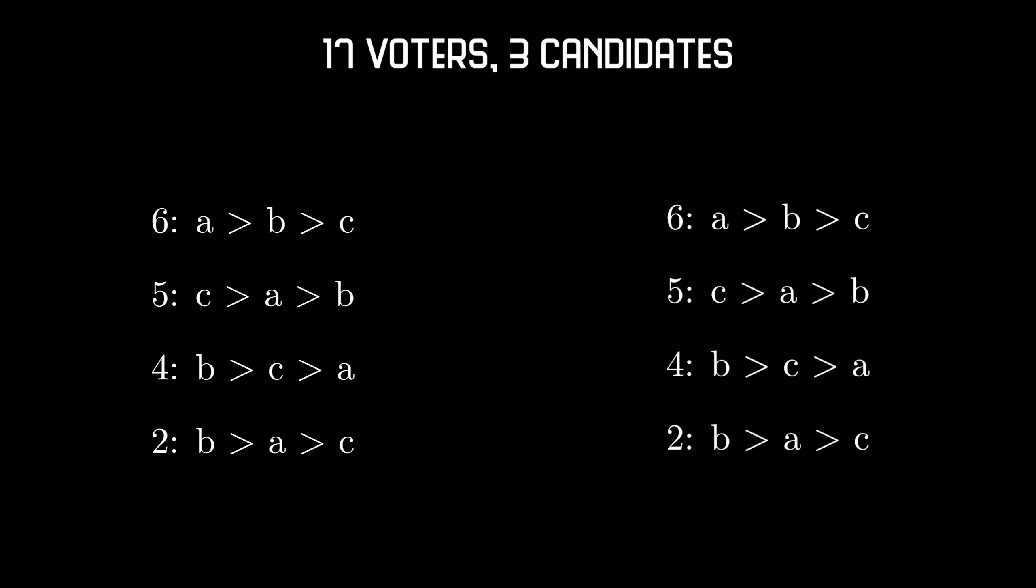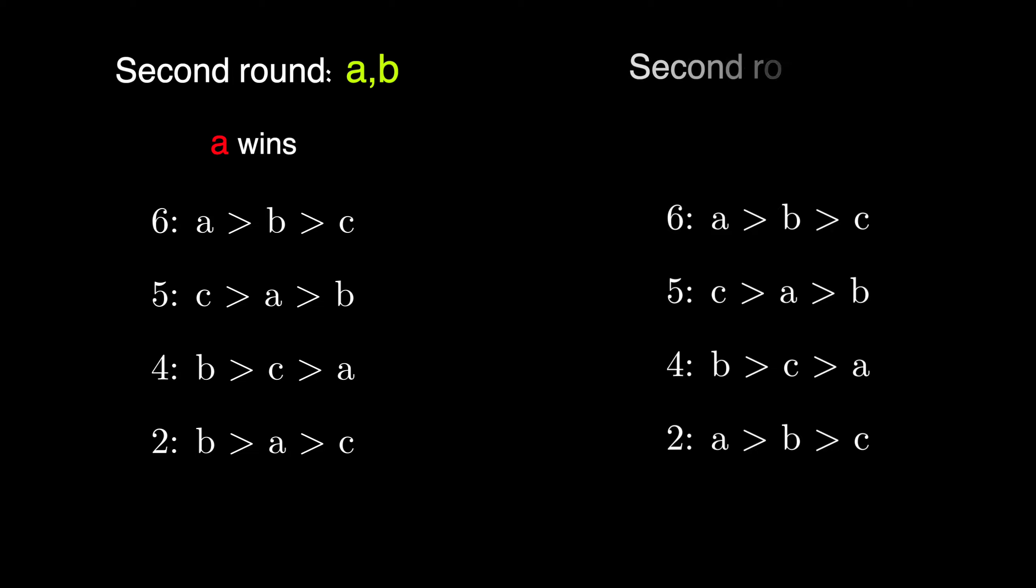And now I want to demonstrate something extremely special. Let's have 17 voters and 3 candidates. Consider two different election profiles. The only difference is in the last row, where two voters have different preferences on A and B. In the first profile A and B enter the second round and A wins. But in the second profile A and C will go to the next round and C becomes a winner there. Therefore, if only two voters are slightly influenced, the two leading candidates end up in a disadvantaged position.